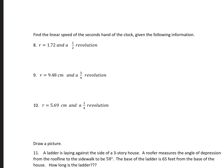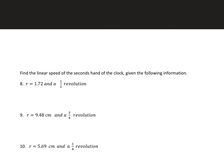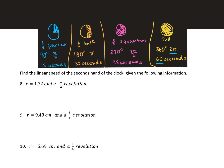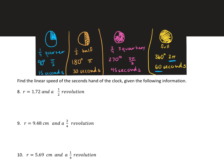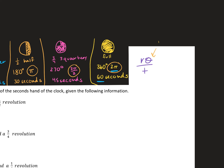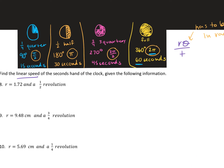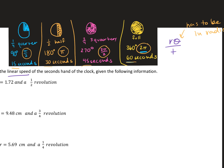Let's look at the linear speed clock questions. The formula for linear speed is V = rθ/t. Know that a quarter revolution corresponds to θ = π/2, half revolution is π, three-quarters is 3π/2, and a full revolution is 2π. The radius r will be given, theta must be in radians, and time depends on how far around the clock you're going.